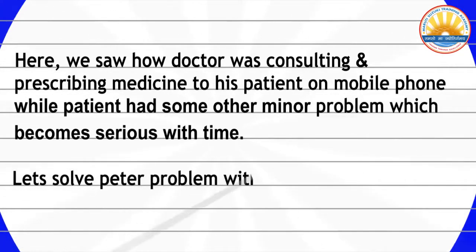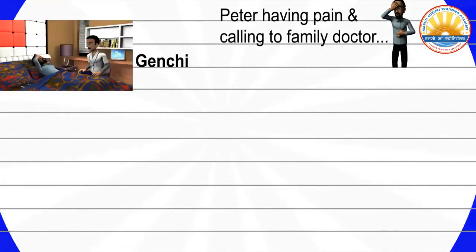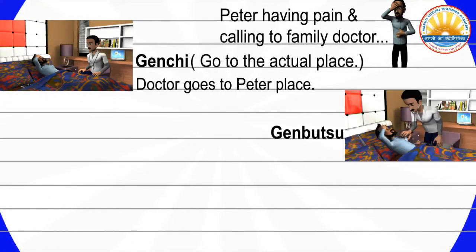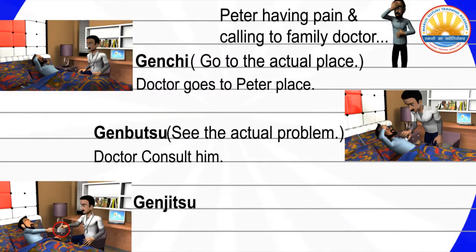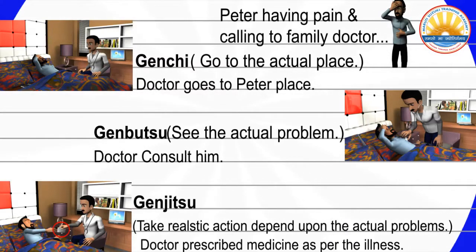Let's solve Peter's problem with 3G. Peter is having pain and calls the family doctor. The first G: go to the actual place — the doctor comes in person. The second G: see the actual problems — the doctor consults him properly. The third G: take realistic action based on the actual problems — the doctor prescribes medicine as per the actual diagnosis.